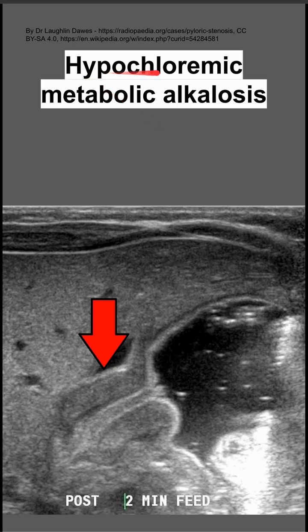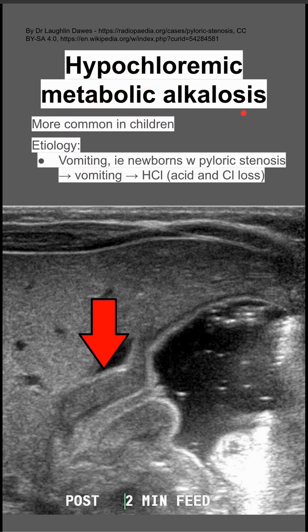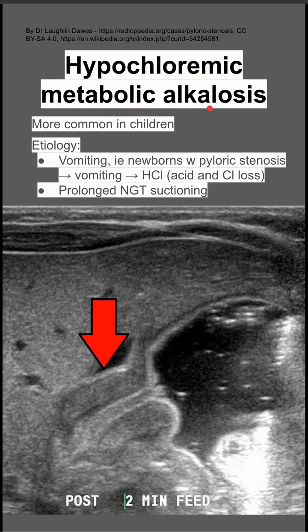Here are some notes on hypochloremic metabolic alkalosis. This condition is more common in children. The etiology is usually vomiting, such as in newborns with pyloric stenosis, which you can see in the imaging. Pyloric stenosis can cause vomiting, which causes you to lose hydrogen chloride — your acid and your chloride — leading to the hypochloremic metabolic alkalosis.